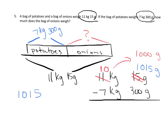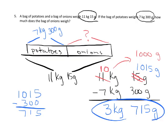So now we can subtract 1,015 grams minus 300. And that gives us 715 grams. And then 10 kilograms minus 7 kilograms gives us 3 kilograms. And that is our answer. 3 kilograms, 715 grams. And that's how much the onions weigh.